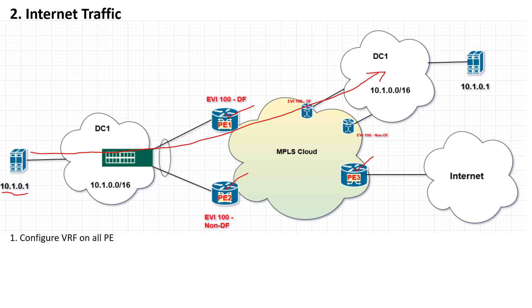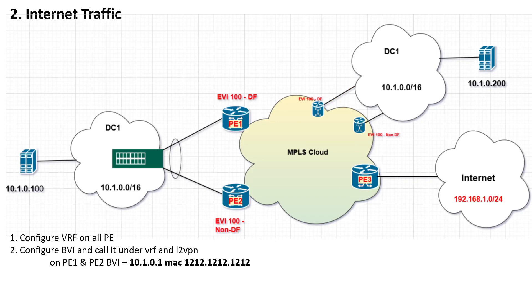We configure VRF on all PE routers — PE1, PE2, and PE3. We configure BVI on PE1 and PE2. On PE3, it is a normal VRF — we can call it VRF internet — so we do not need any BVI configuration there, because that is already a Layer 3 domain. The BVI is configured on PE1 and PE2 as 10.1.0.1 with the shared MAC address. We need to call that BVI under the Layer 2 VPN bridge domain as a routed interface, and when we configure the BVI IP address, we also configure the VRF under that BVI interface.